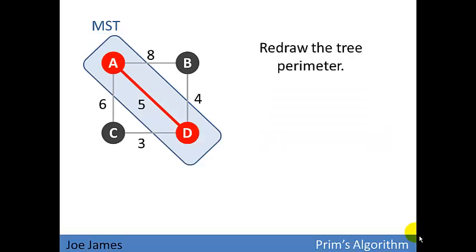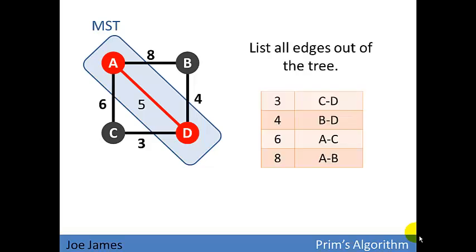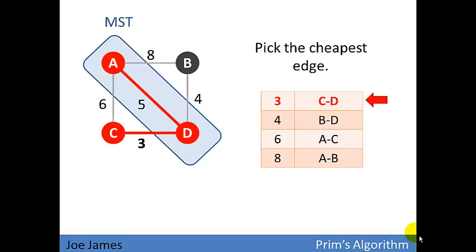So now our minimum spanning tree includes vertices A and D. We redraw the tree perimeter around A and D, and we say, what is the cheapest way out of our minimum spanning tree, A and D, to reach a new vertex? Well, all four edges would do that, that are remaining. And the cheapest one of those is three, which goes to vertex C. So we'll pick the cheapest edge.